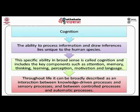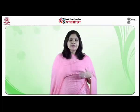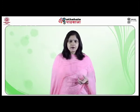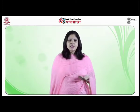Throughout life, cognition can be broadly described as an interaction between knowledge-driven processes and sensory processes, and between control processes and automatic processes. Among the specific aspects used to gauge the functioning of cognition are judgment, use and manipulation of symbols, perception, and acquisition of skills.